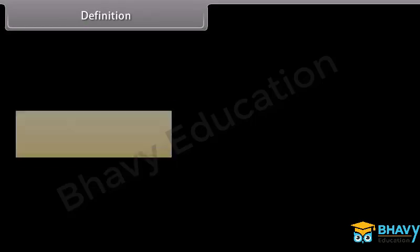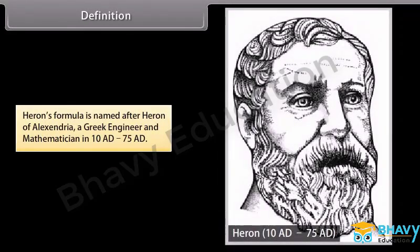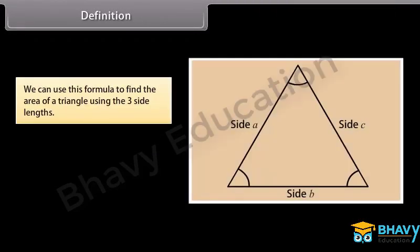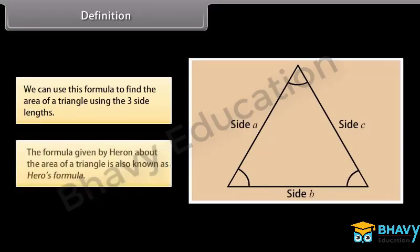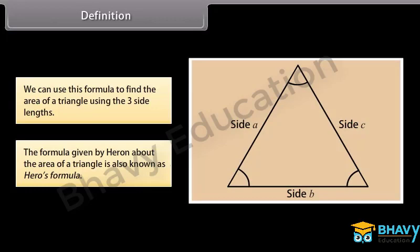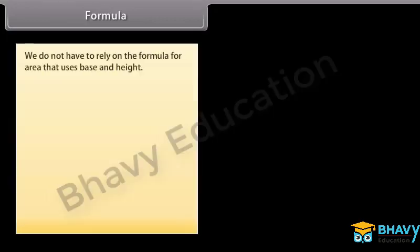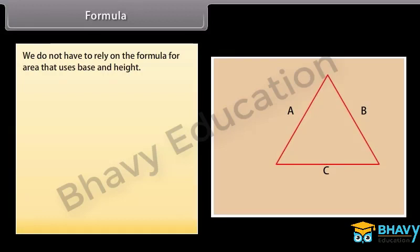Definition: Heron's formula is named after Heron of Alexandria, a Greek engineer and mathematician. We can use this formula to find the area of a triangle using the three side lengths. The formula given by Heron about the area of a triangle is also known as Hero's formula. We do not have to rely on the formula for area that uses base and height.